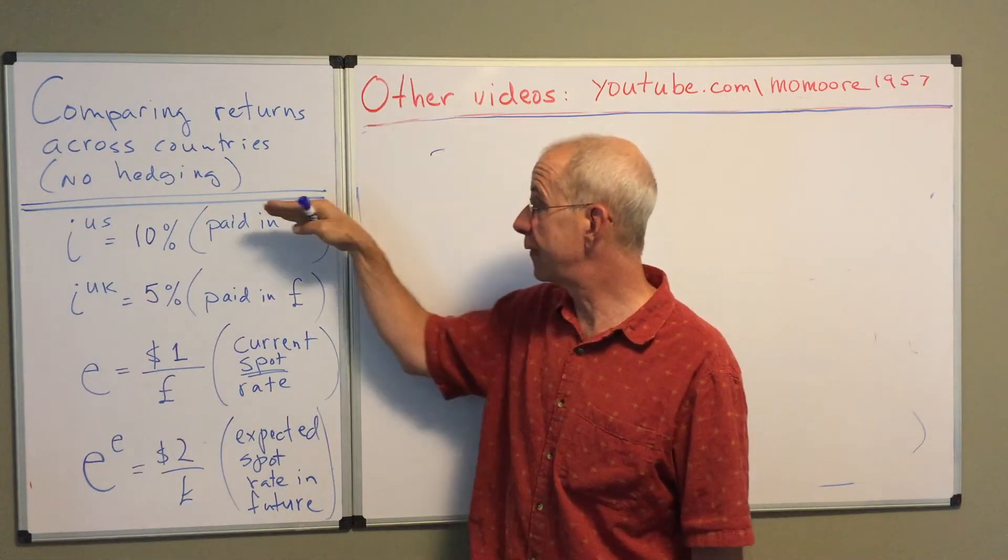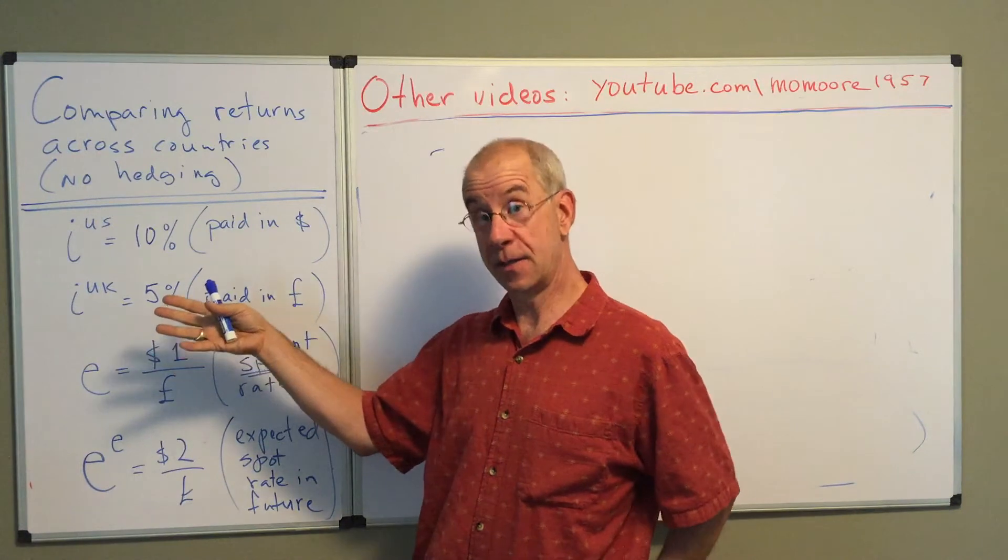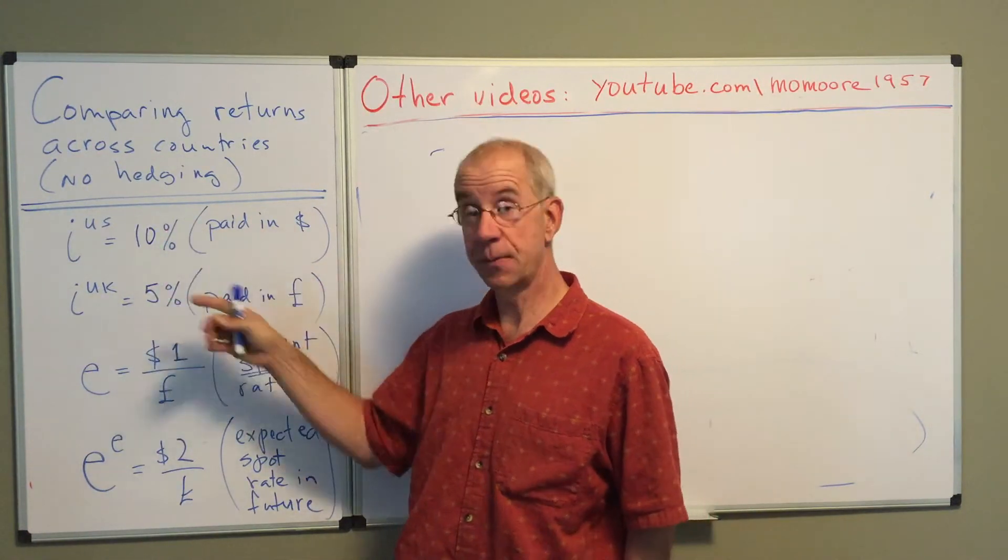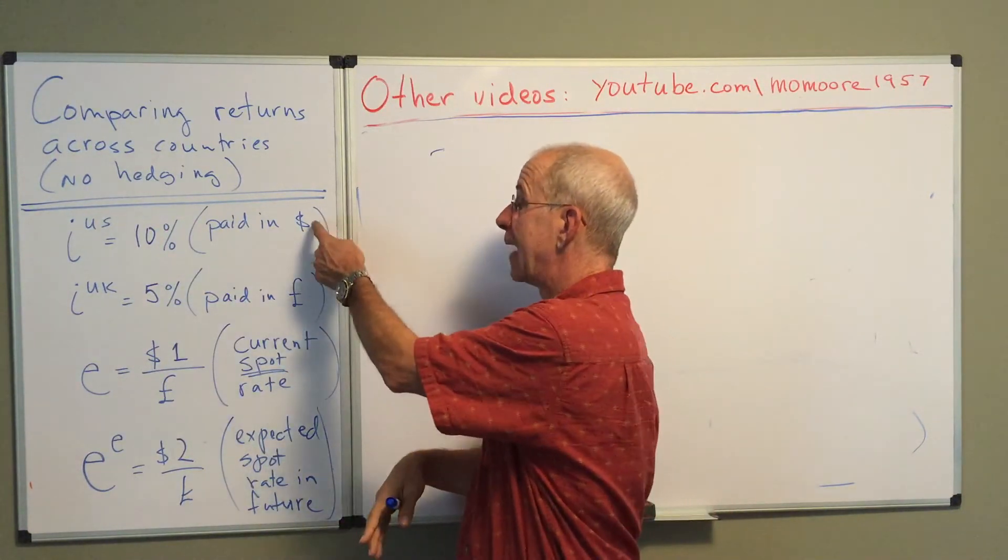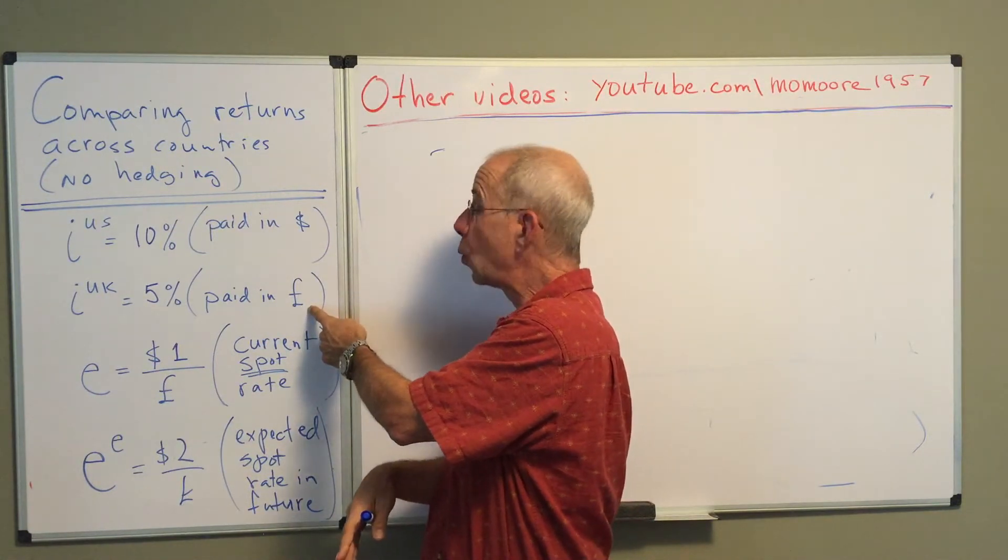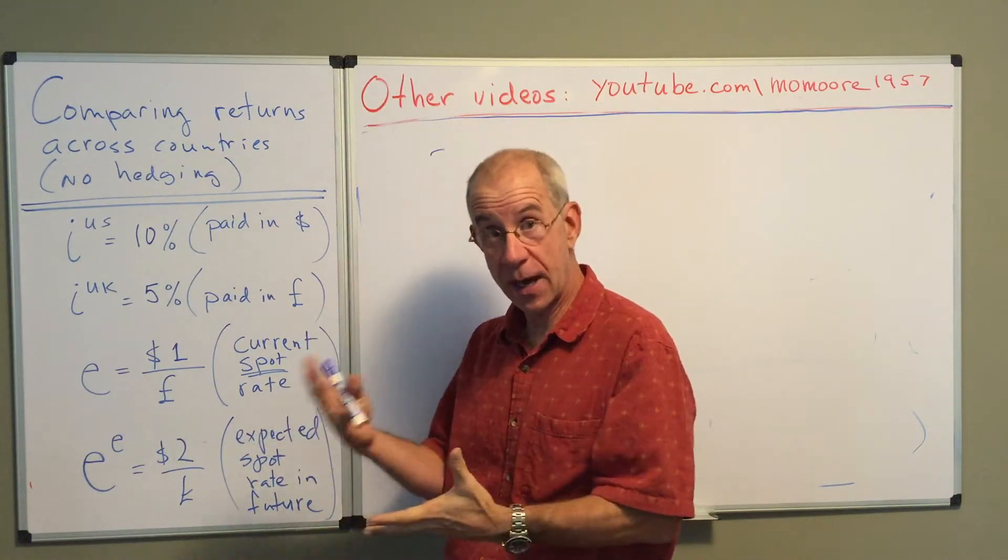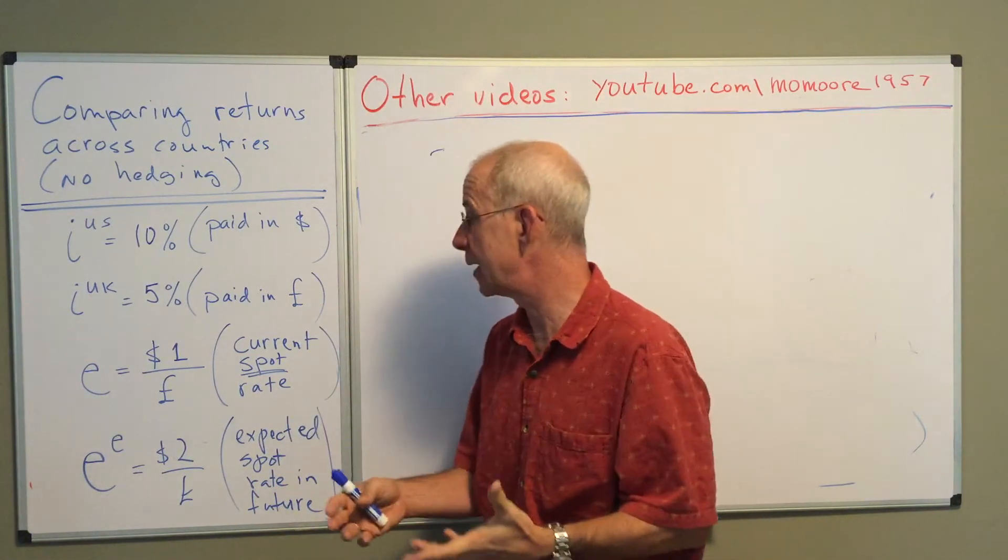So at a very superficial level, it looks like the U.S. bond is the better deal. It pays 10 percent as opposed to five percent. But the fact that these are paid in different currencies will potentially, and in fact in this case will, change the relative attractiveness of the two assets.